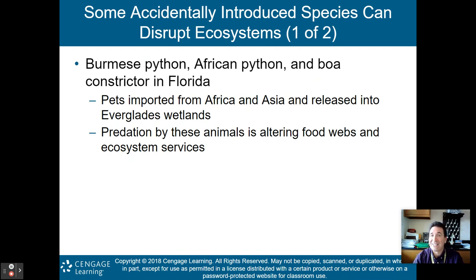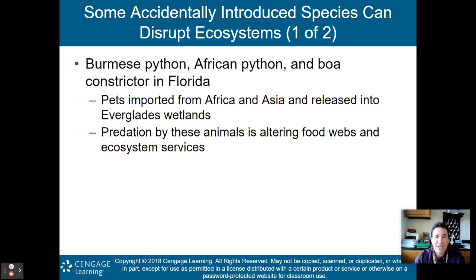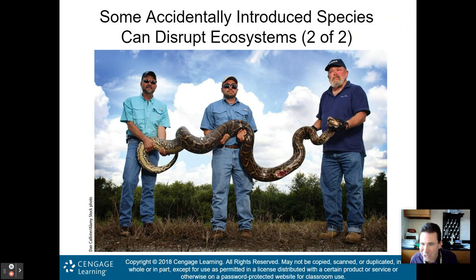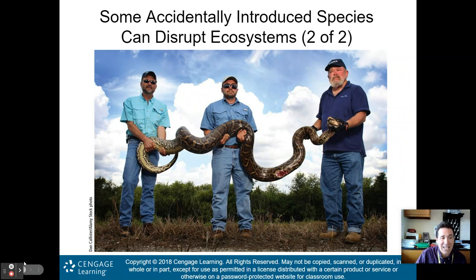Another example is the Burmese python, which was accidentally introduced. Burmese pythons, African pythons, and boa constrictors are found in Florida because they were imported as pets, but then people released them into the Everglades wetlands. Predation by these animals is altering the food webs and ecosystem services in the Everglades because they have no natural predators, so they're eating everything up and multiplying unchecked. This is a picture of a Burmese python found in the Florida Everglades — a non-native invasive species.